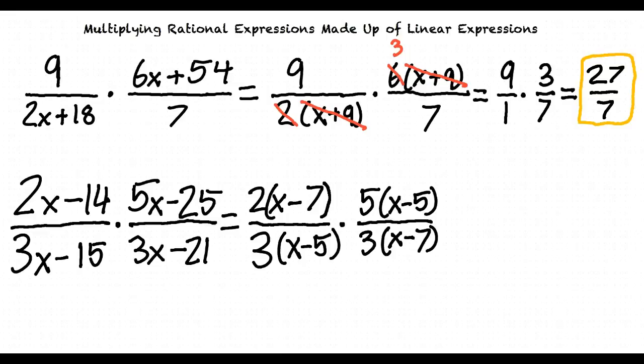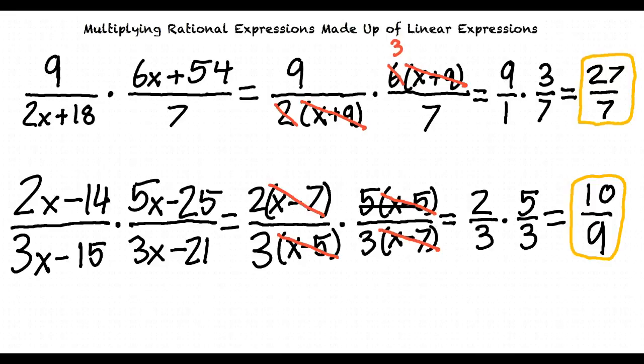Now we are able to cancel the common factors leaving us with 2 over 3 times 5 over 3. In this form we multiply the fractions together to give us a final answer of 10 over 9.